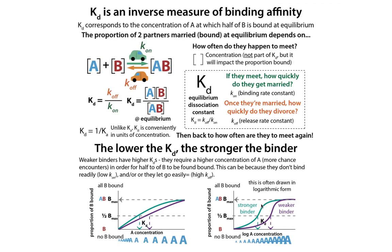We often draw this in logarithmic form to make the halfway point easier to see and so our values aren't scrunched up. The KD is the inverse of the Ka — and this isn't the acid Ka, this is the Ka as in the association constant, which is the Keq for the forward binding reaction. The KD is one over that, so it's the equilibrium equation for the unbinding — the dissociation. It takes into account Koff, the rate of unbinding, and Kon, the rate of binding. This tells you how tight the binding is in an inverse measure.